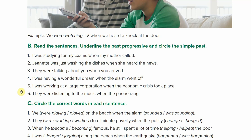Number five: I was working at a large corporation when the economic crisis took place. Was working is your past progressive, and took is your simple past — this happened while this was happening. Number six: they were listening to the music when the phone rang. Were listening is your past progressive, rang is your simple past.